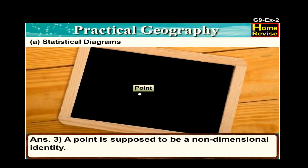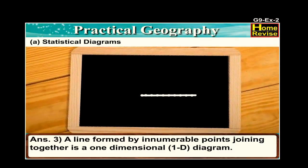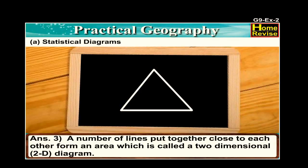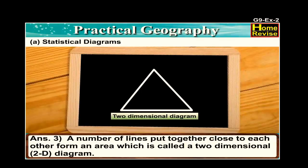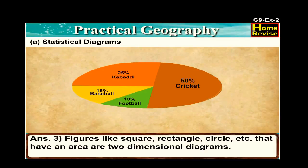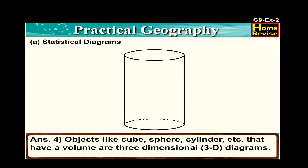A point is supposed to be a non-dimensional identity. A line formed by innumerable points joining together is a one-dimensional, i.e., 1D diagram. A number of lines put together close to each other form an area, which is called a two-dimensional or 2D diagram. Figures like square, rectangle, circle etc. that have an area are two-dimensional diagrams. Objects like cube, cylinder etc. that have a volume are three-dimensional or 3D diagrams.